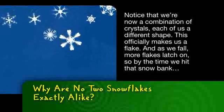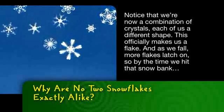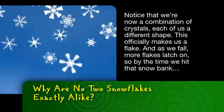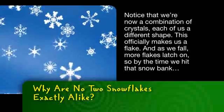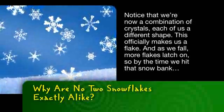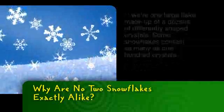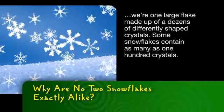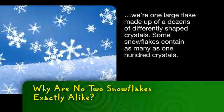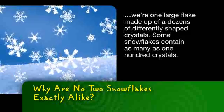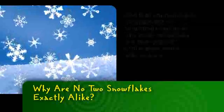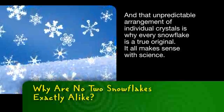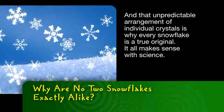Notice that we're now a combination of crystals, each of us a different shape. This officially makes us a flake. And as we fall, more flakes latch on. So by the time we hit that snow bank, we're one large flake made up of dozens of differently shaped crystals. Some snowflakes contain as many as 100 crystals, and that unpredictable arrangement of individual crystals is why every snowflake is a true original.